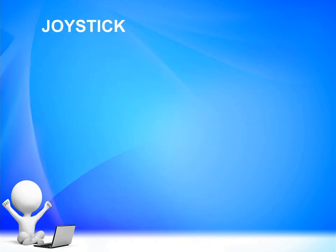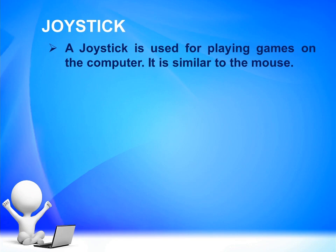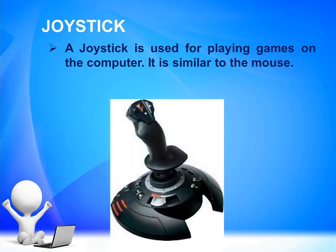Next, joystick. A joystick is used for playing games on a computer. It is similar to the mouse. A joystick has a vertical stick with a track ball at its bottom. We can move the object on the screen using the joystick. The stick can be operated like the gear of a motor car.